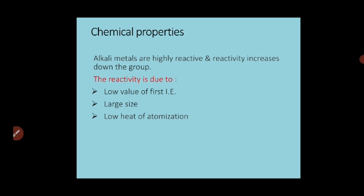Let me explain why these S block elements are very reactive. In the last video, we have already seen that group 1 and group 2 elements are very reactive and hence they always occur in compound form or molecular form — they do not occur in free state. They are reactive because of their low value of first ionization enthalpy, their large size compared to other elements in the same period, and low heat of atomization. The energy required to separate the atoms is called heat of atomization, and that is very low, making them very reactive.